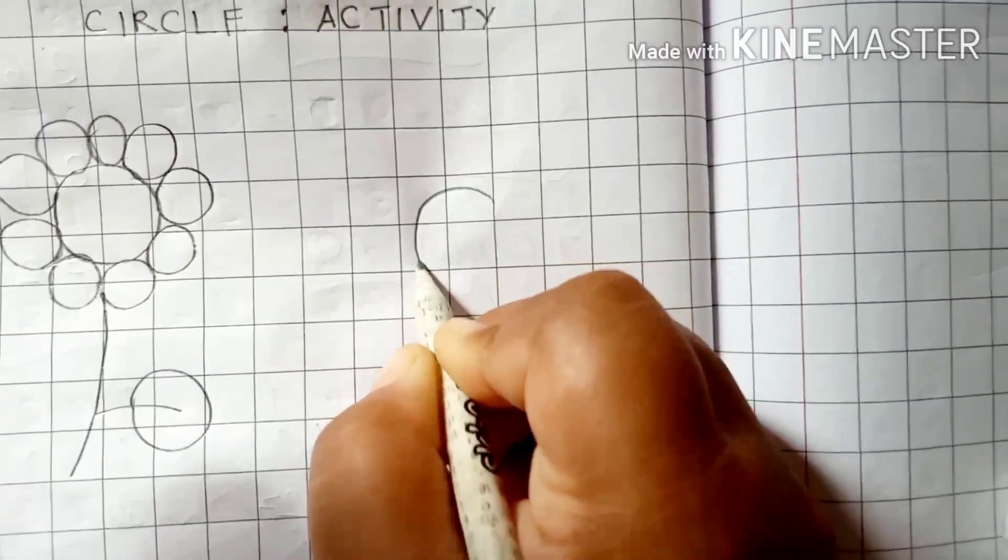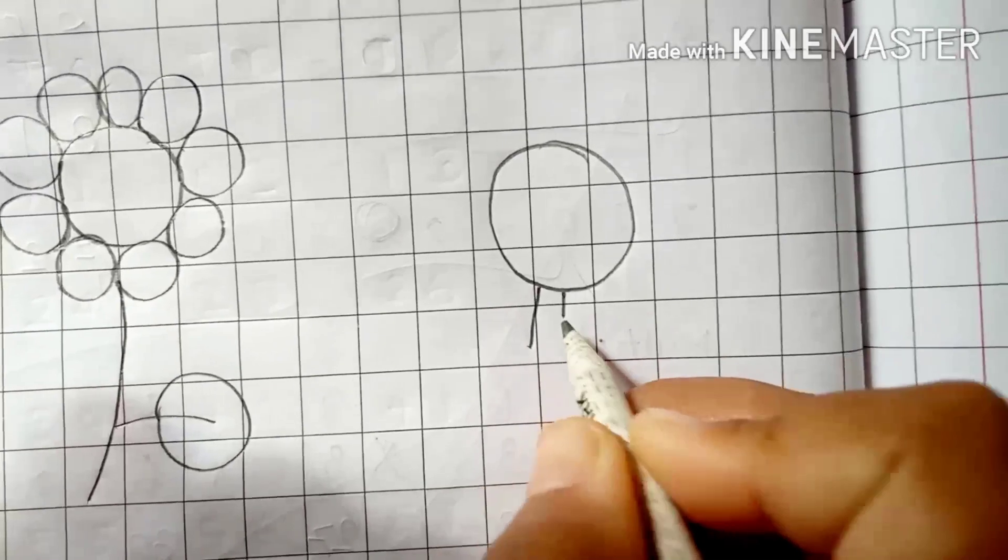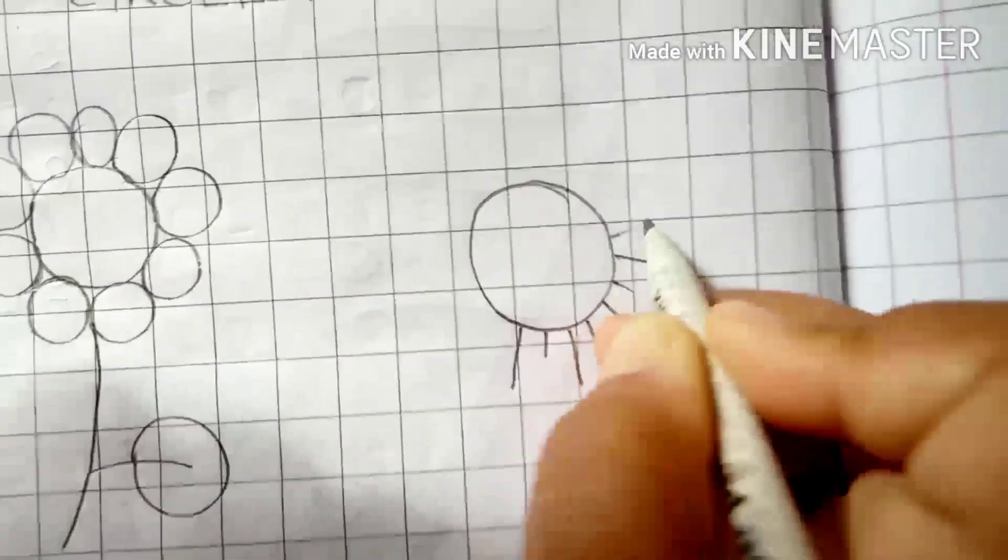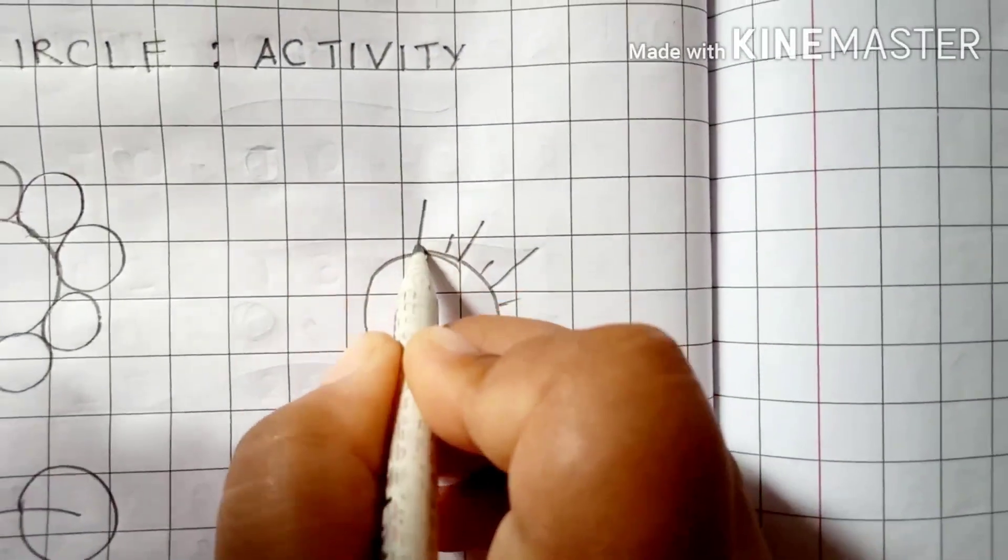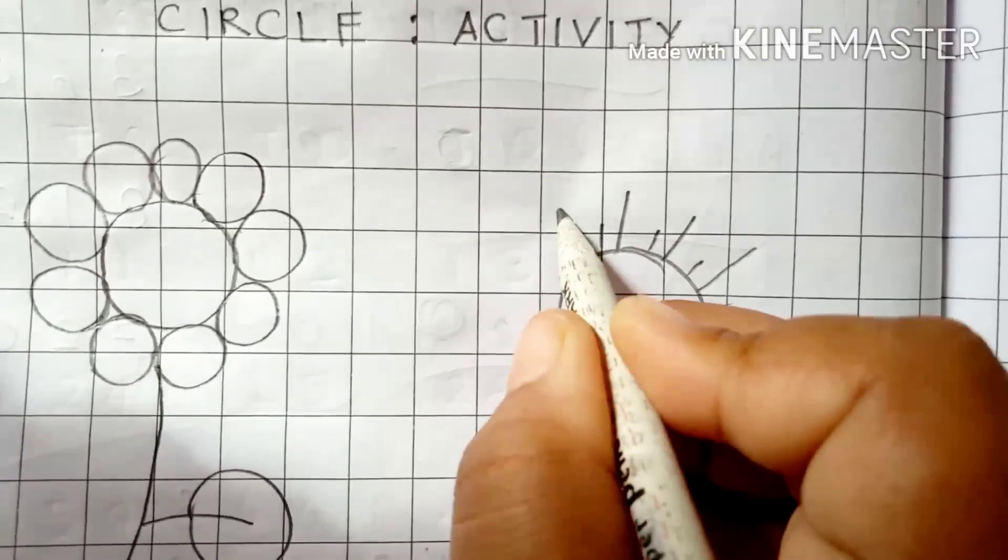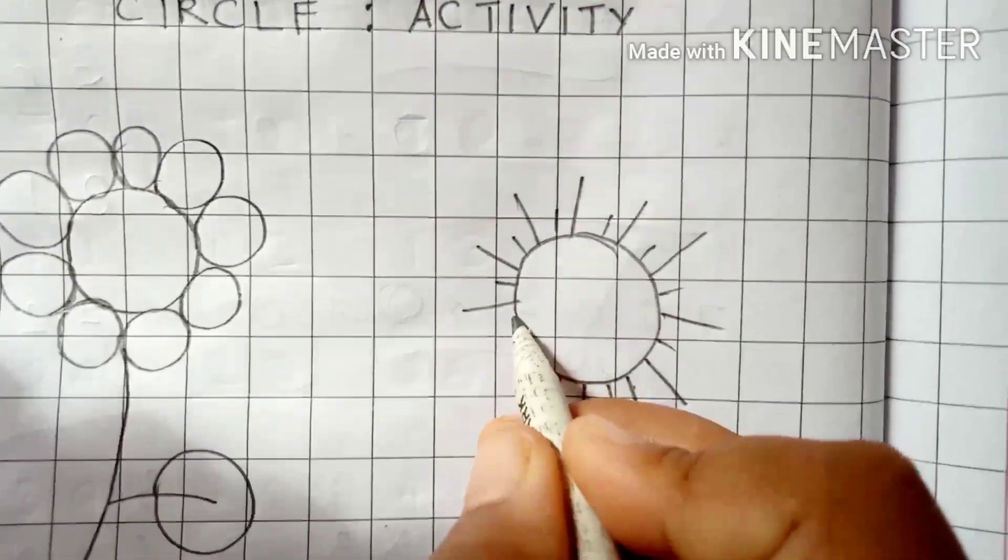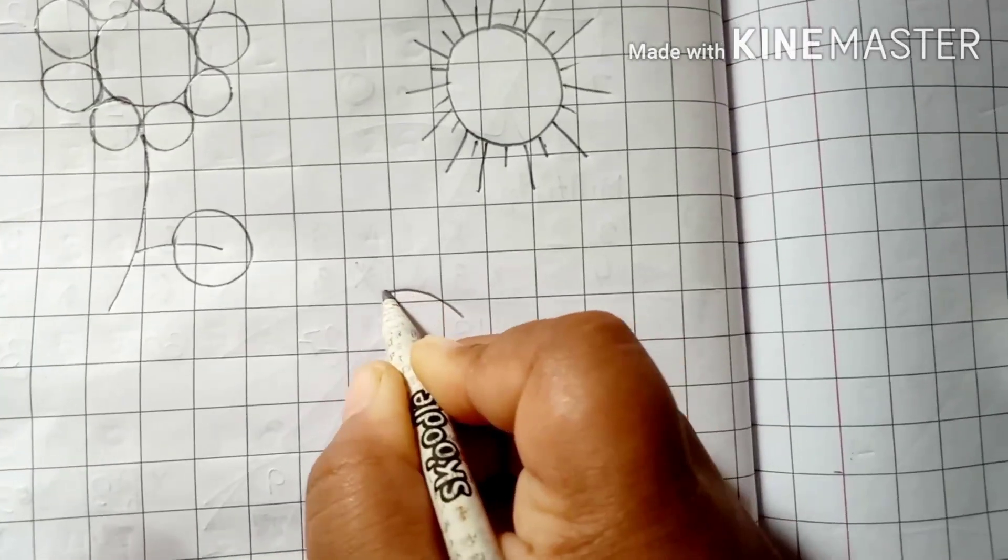Then, we will make another circle. This will be sun. One big line, one small line, like this. These are the rays of the sun. So, we have made flower. And now, this is sun. It's very, very easy. So, sun complete.